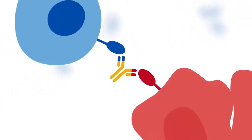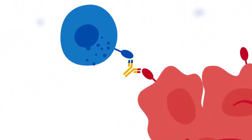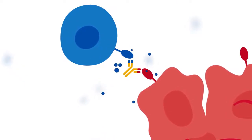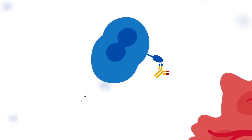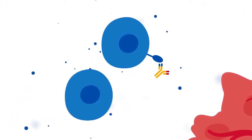This newly formed synapse activates the T-cell, causing it to release cytotoxic granules that kill the tumour cell. The activated T-cell starts to proliferate and release cytokines.